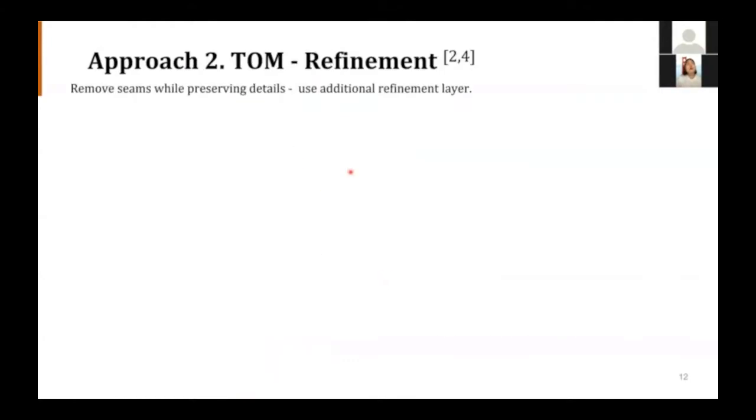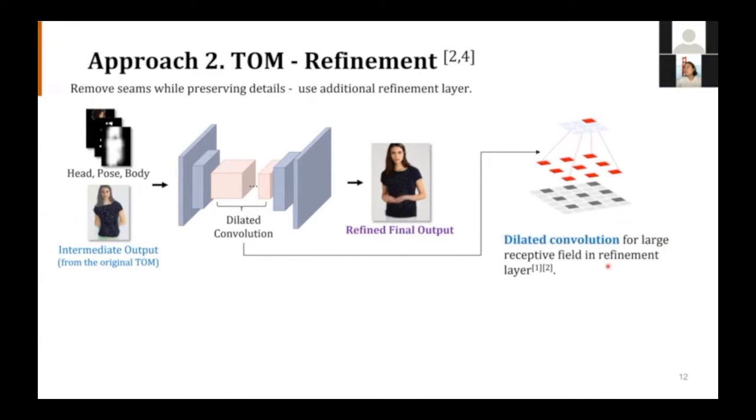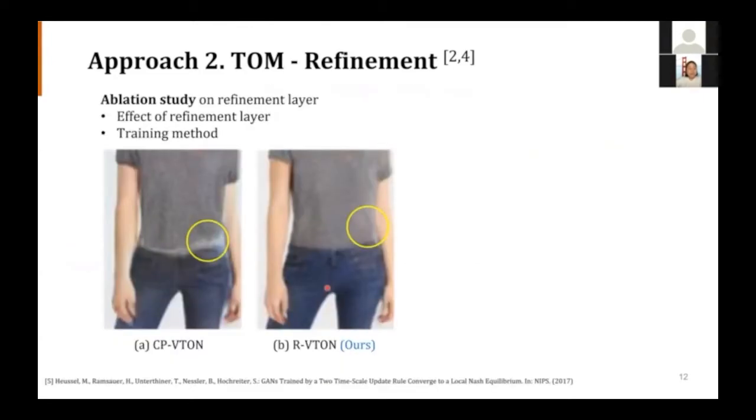Second approach is refinement on TOM, the second network. We are proposing to use an additional refinement layer on TOM for more seamless output. We are going to use the output from the original paper as intermediate output and pass it through dilated convolution. Refined final output is our final output. Dilated convolution is widely used for large receptive fields in refinement layers. So, our network is using not only the original network, but also a refinement network separately. Therefore, loss also changed. CPVTON used only LTOM, but RVTAN used one more loss for refinement network, that is L1 and LVGG. As you can see from the yellow circle of the picture, images past the refinement layer show seamless images.